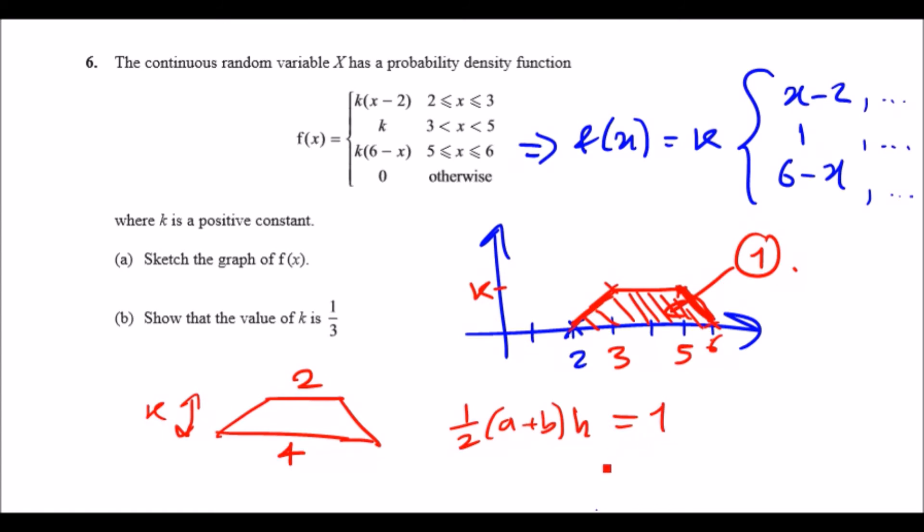Just literally substitute the values. We have firstly half, and inside we have 2 plus 4, so half times 2 plus 4, and the height is k, and it must equal 1. Simplifying this, you get half of 6 is 3, so 3k, and hence k must be a third. That's it, parts a and b have been solved.